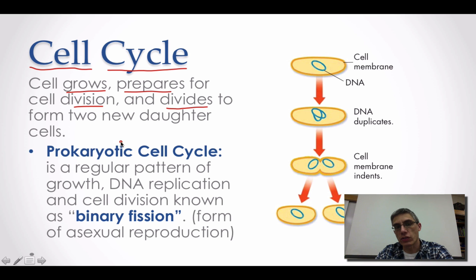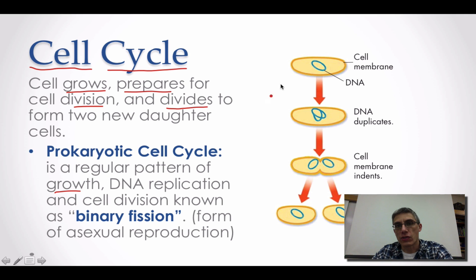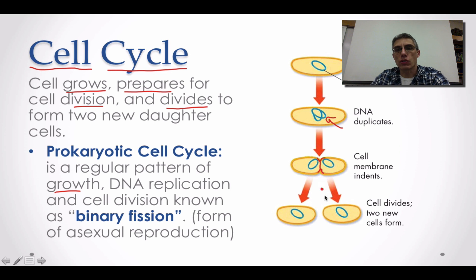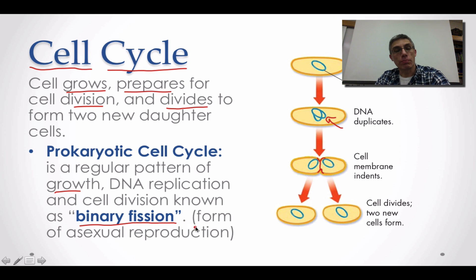In prokaryotic cells, because these are relatively simple cells, there's not as much going on in the cell cycle. There's a regular pattern of growth, then some DNA replication to ensure each daughter cell gets a copy. Eventually the cell begins to split in two — the cytoplasm indents and eventually meets in the middle, separating the two cells. Some textbooks give a special name to prokaryotic cell division and call it binary fission, which is a form of asexual reproduction — taking one parent cell and producing two identical offspring.